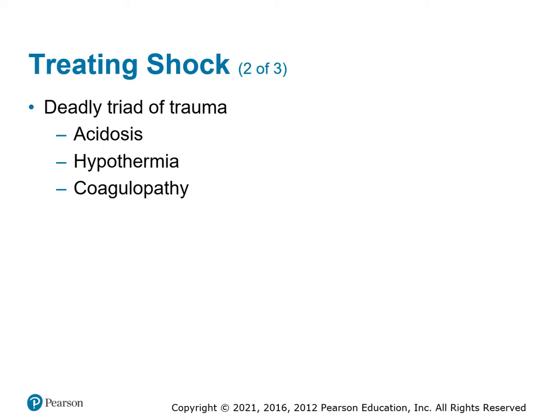Things that kill patients during trauma include acidosis from anaerobic metabolism at the cellular level, and poor perfusion causing failure to blow off carbon dioxide, which builds up acid in the body. Hypothermia decreases coagulation, so treat for hypothermia even on warm days — put a blanket on them. Don't leave patients trauma-naked; see and then cover. Coagulopathy — underlying conditions that affect clotting — must also be addressed when transporting to the hospital.